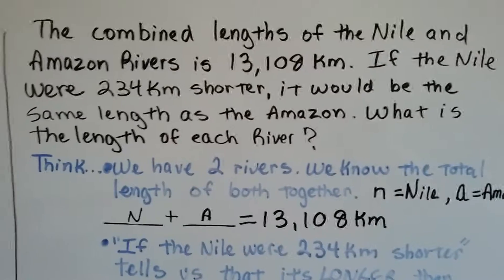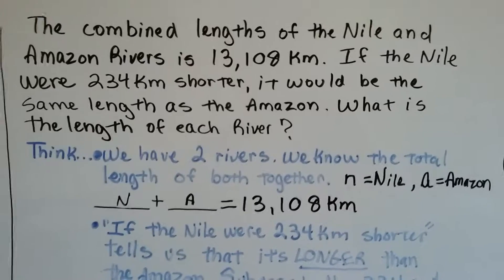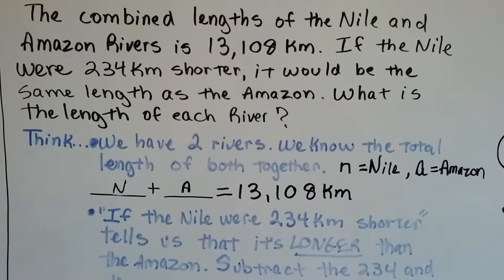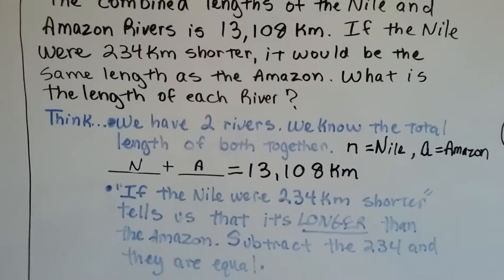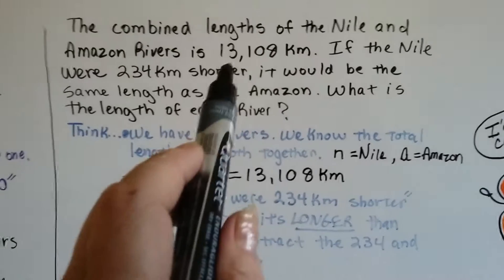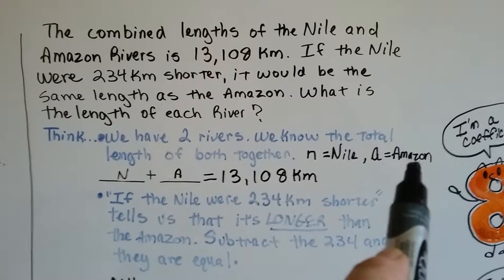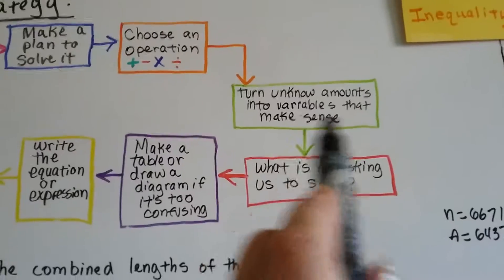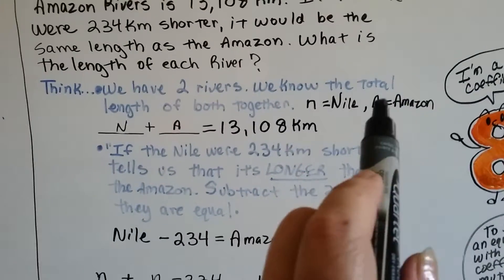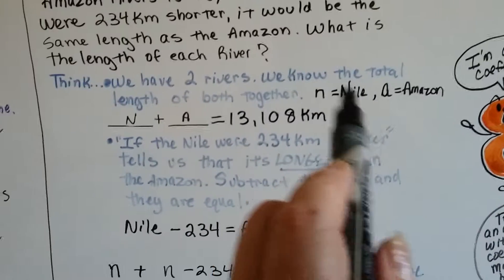This is a combined lengths problem: the combined lengths of the Nile and Amazon rivers is 13,108 kilometers. If the Nile were 234 kilometers shorter, it would be the same length as the Amazon. What is the length of each river? We have two rivers, and we know their total length together is 13,108. Let N be the Nile and A be the Amazon.